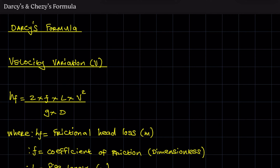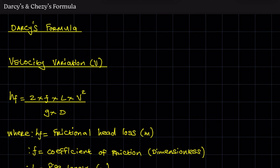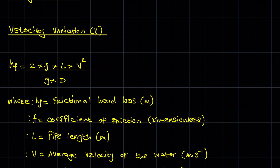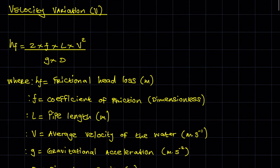If we've been given the velocity, it is much easier to calculate the head losses due to friction using the velocity variation. So as far as Darcy's formula, when you have the velocity, it is: hf = 2fLv² / (gd).